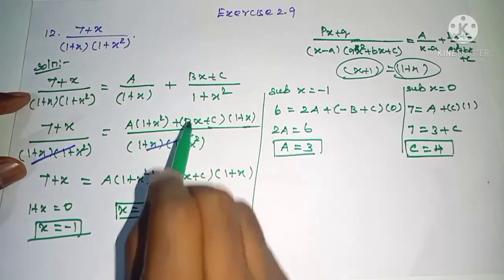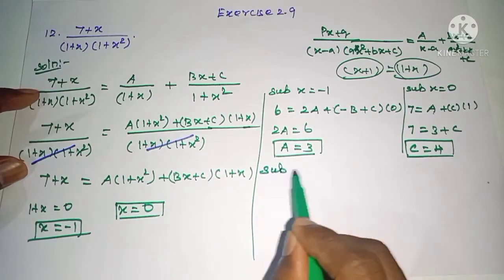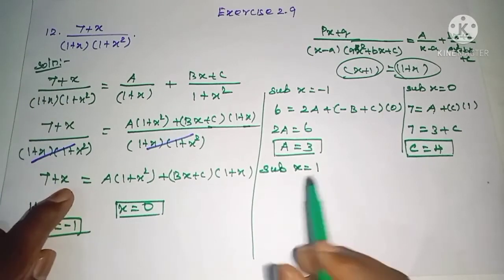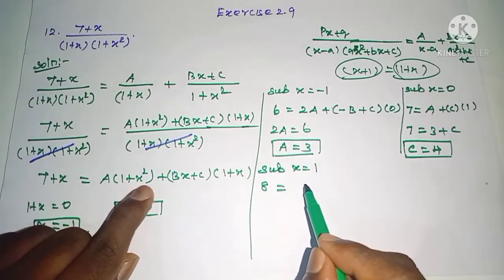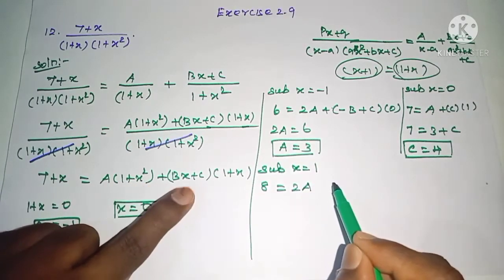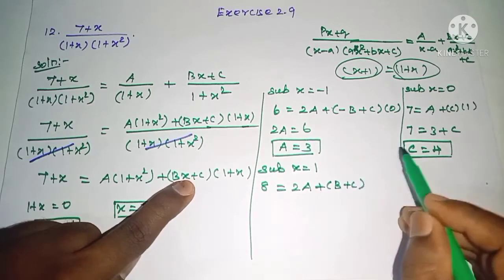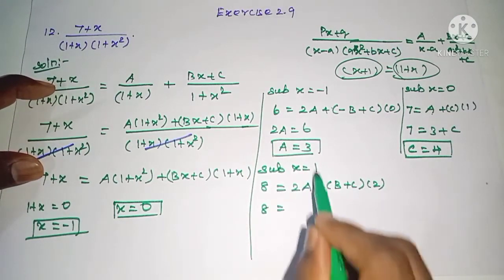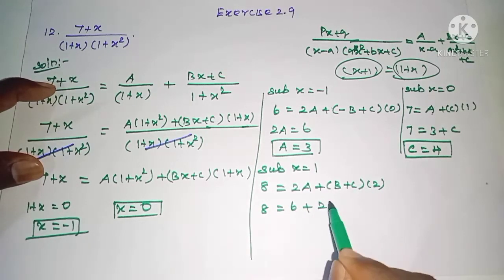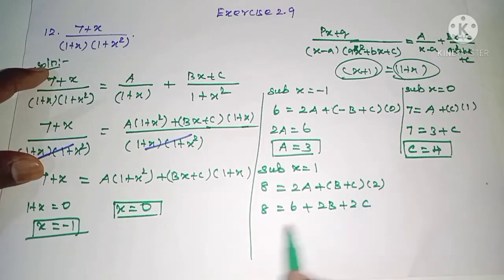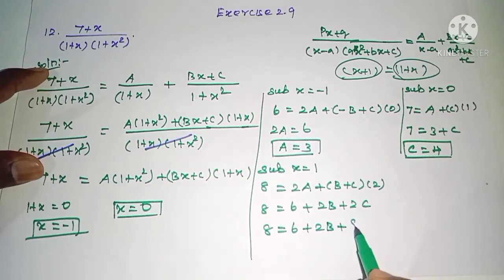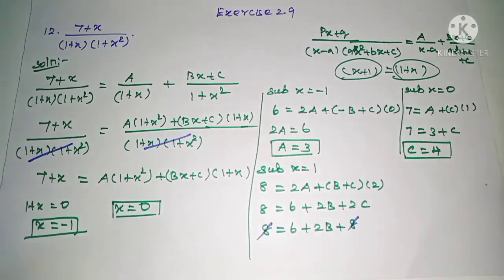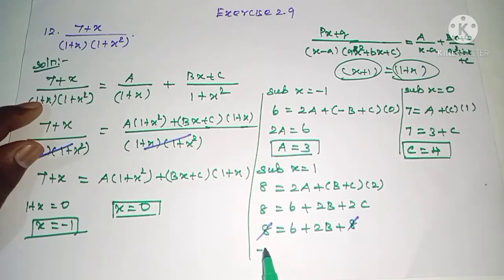We have found A and C. Now substituting x = 1 to find B: the left side gives 7 + 1 = 8. On the right side, A(1 + 1) + (B + C)(1 + 1) = 2A + 2(B + C) = 2(3) + 2(B + 4) = 6 + 2B + 8 = 8. So 8 = 6 + 2B + 2(4), which gives 2B = 8 − 6 − 8 = −6, so B = −3.